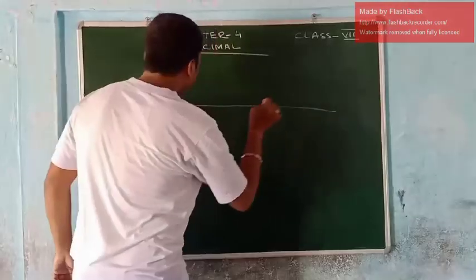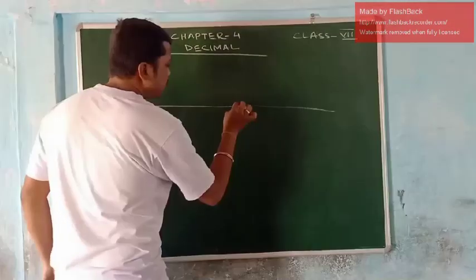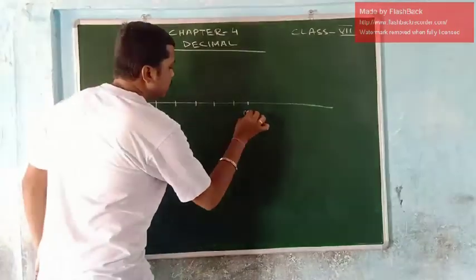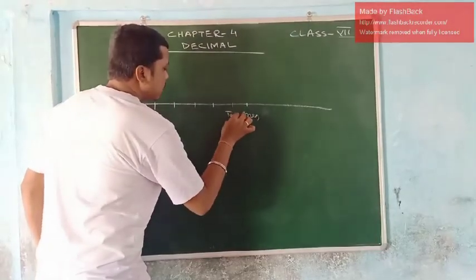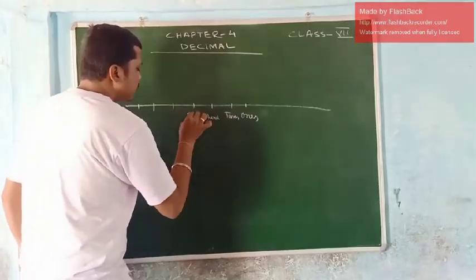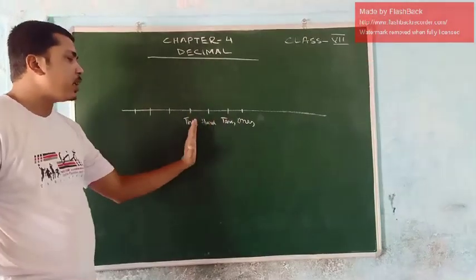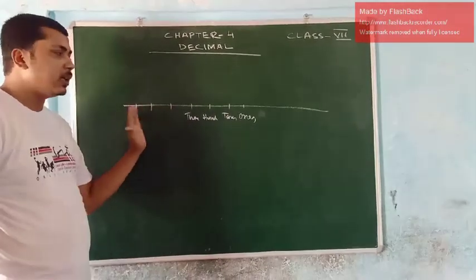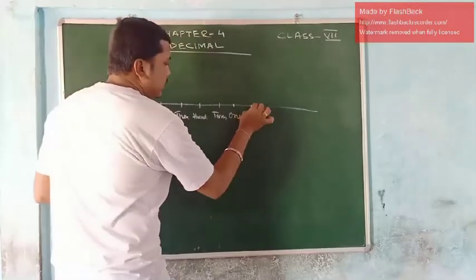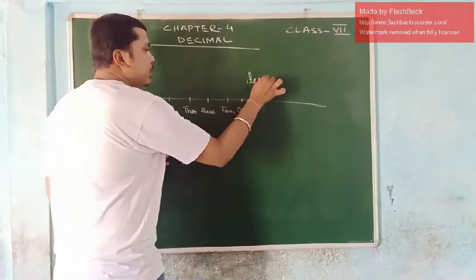Earlier you have learned about the number system — ones, tens, hundreds, thousands, ten thousands, lakhs, ten lakhs, and so on. Now, after ones, here it is decimal. After ones, the decimal point appears.